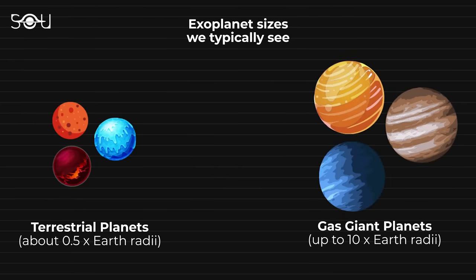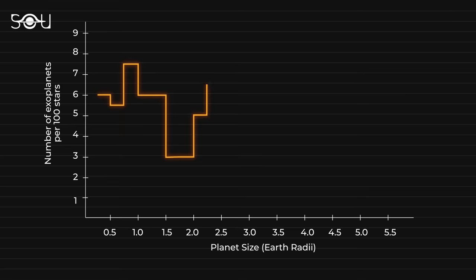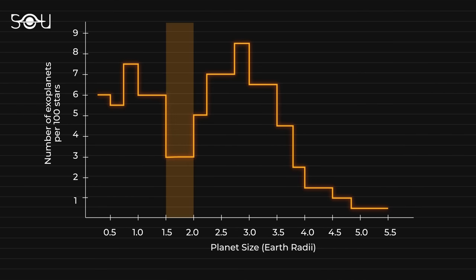However, there is a noticeable gap between these categories. Exoplanets with radii between 1.5 and 2 times that of Earth are surprisingly scarce, resulting in what is known as Small Planet Radius Valley.